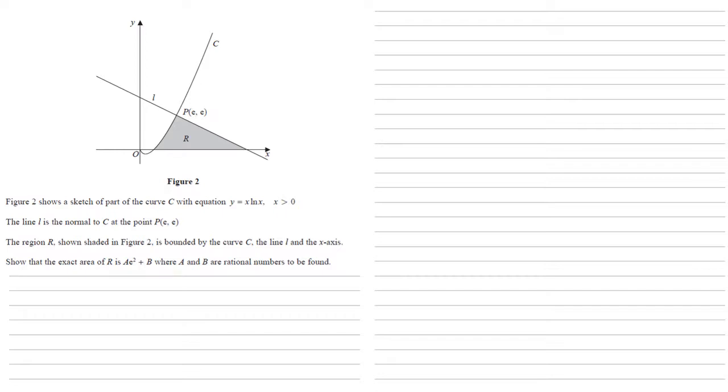The region R, shown shaded in Figure 2, is bounded by the curve C, the line L, and the x-axis. We want to show that the exact area of R is Ae squared plus B, where A and B are rational numbers to be found. So to start with, we're going to split our area R into two shapes.